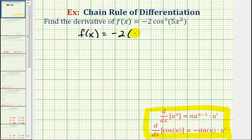it might be helpful to rewrite this in the form f(x) equals negative two, and then in parentheses, cosine five x squared, raised to the third power. In this form, I think it's much easier to see that the inner function would be cosine five x squared,